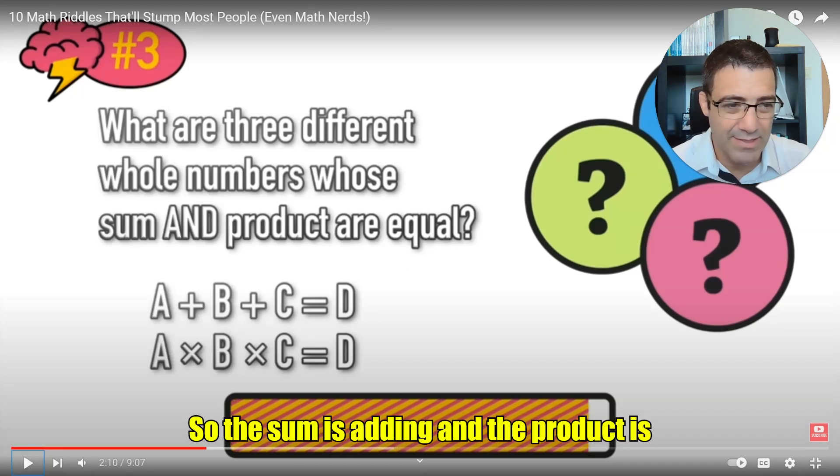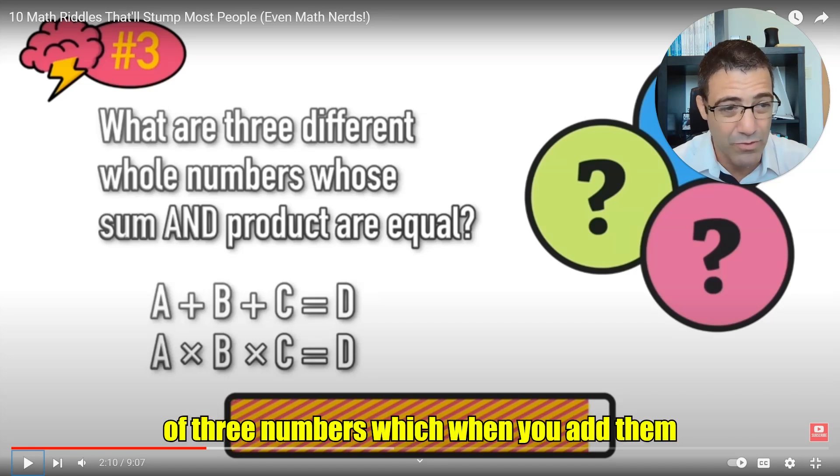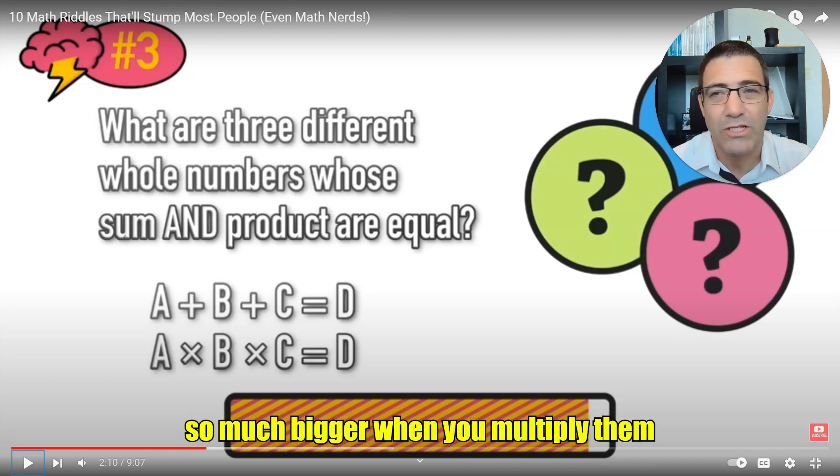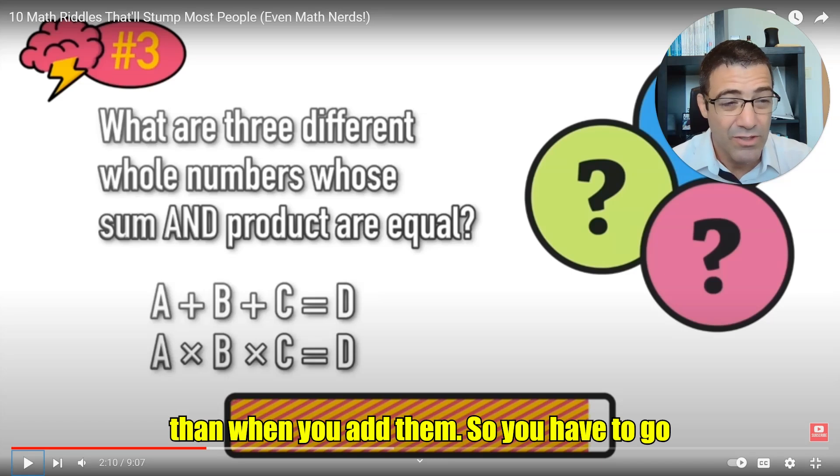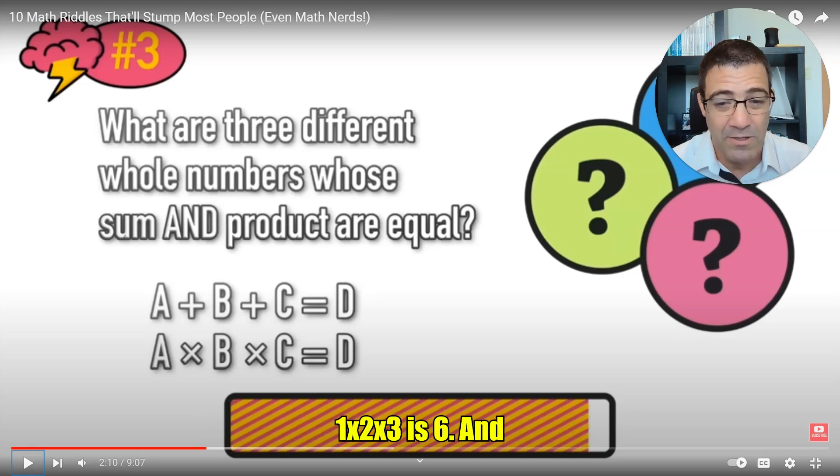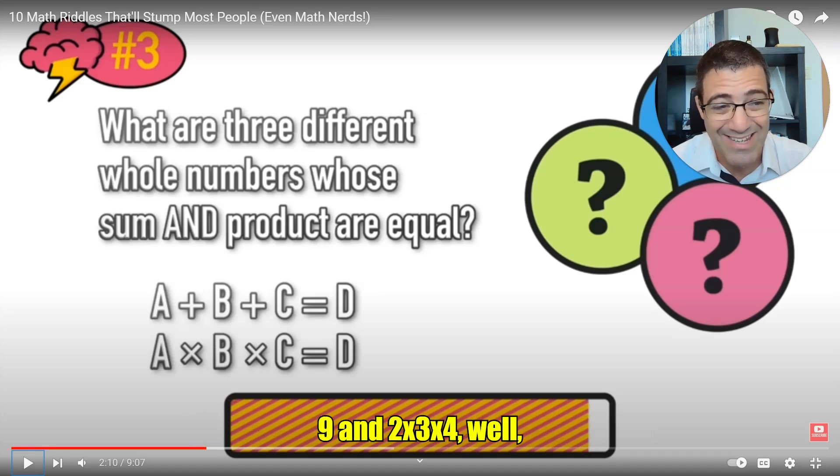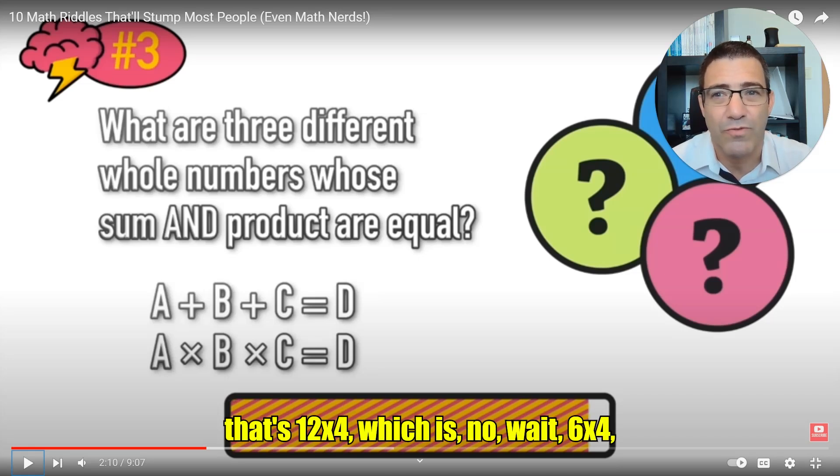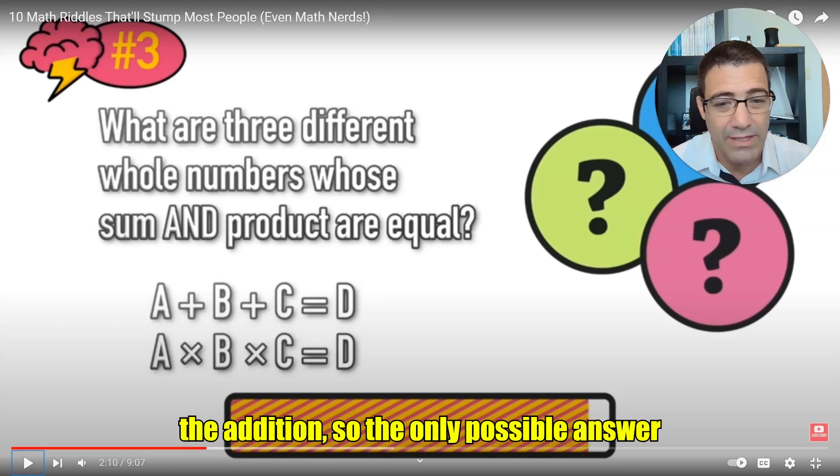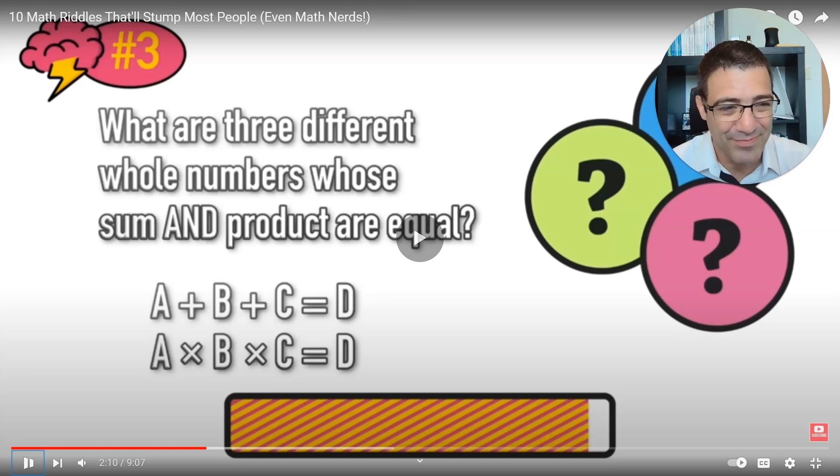So the sum is adding and the product is multiplying and we're looking for a triplet or a set of three numbers which when you add them is equal to when you multiply them. And the thing is if you think about numbers like 10, 11, 12, those are going to be so much bigger when you multiply them than when you add them. You have to go with really small numbers. So the first thought is 1, 2, 3, right? 1 plus 2 plus 3 is 6 and 1 times 2 times 3 is 6, and those two triplets are equal. However, if you add like 2, 3, 4, 2 plus 3 plus 4 is 9, and 2 times 3 times 4 is 6 times 4 which is 24. And immediately you see that the multiplication is way bigger than the addition so the only possible answer is 1, 2, and 3. Hopefully you got that one as well.